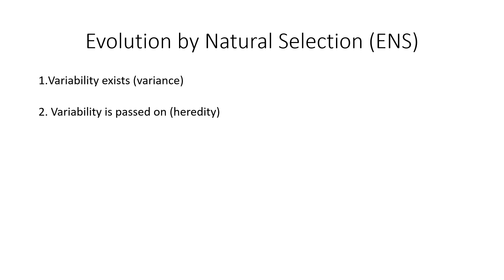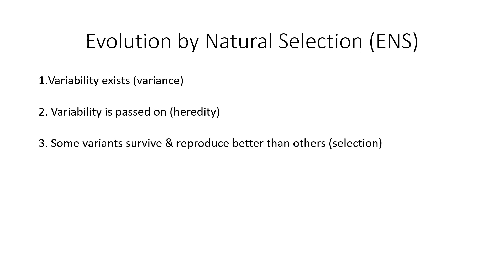The second component is that variability is passed on — this is heredity. Your traits like hair color and eye color can be passed on. We'll come back to epigenetics later, but the point is variability is heritable. The third component is selection: some variants survive and reproduce better than others. Both survival and reproduction are important — evolution doesn't occur if reproduction doesn't occur, because heredity doesn't occur without reproduction.